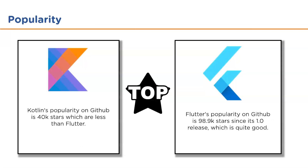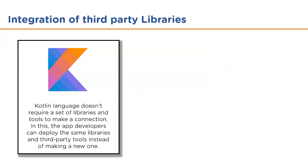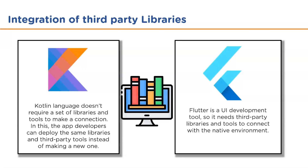In terms of popularity, Kotlin has 40k stars on GitHub, which is less than Flutter's 98.9k stars since its 1.0 release. However, as per Google Trends, the average interest difference between Flutter and Kotlin is not that large — Kotlin scores 72 and Flutter scores 76 out of 100. According to Stack Overflow, the percentage of questions for Flutter is approximately 2.50% and for Kotlin it is 1.17%.